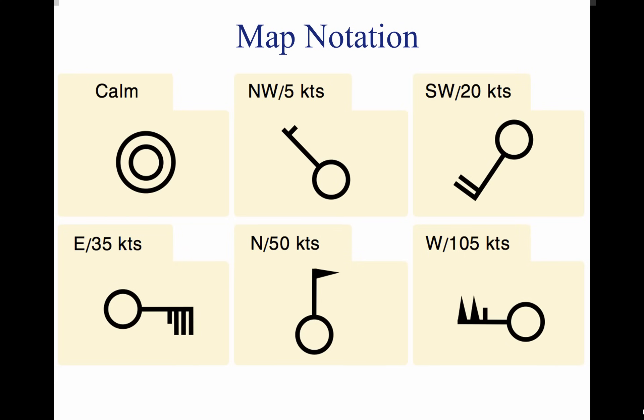As shown above, wind conditions are reported by an arrow attached to the station location circle. The station circle represents the head of the arrow, with the arrow pointing in the direction from which the wind is blowing. Winds are described by the direction from which they blow. Thus, a northwest wind means that the wind is blowing from the northwest toward the southeast.